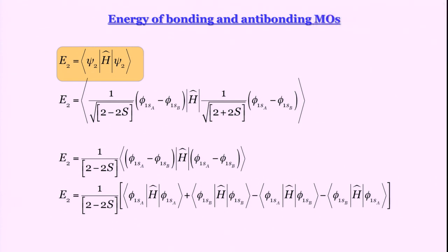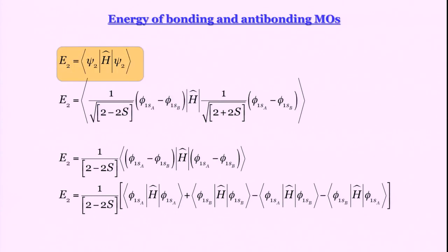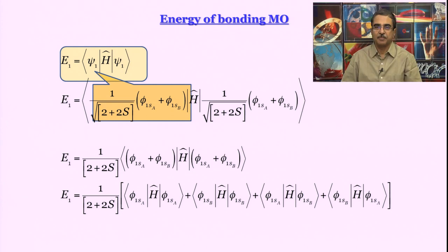Similarly, we can write an expression for E_2. The only difference between E_1 and E_2 is that for the last two cross terms in E_2 the signs are negative, whereas all signs are positive for E_1. The terms themselves are all the same.